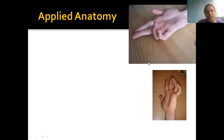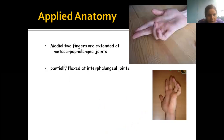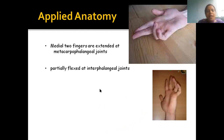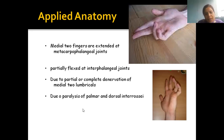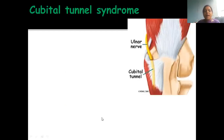If the median nerve is damaged, it results in complete claw hand. In claw hand, the medial two fingers are extended at the metacarpophalangeal joint and partially flexed at the interphalangeal joints, due to partial or complete denervation of the third and fourth lumbricals, and due to paralysis of the palmar and dorsal interossei.